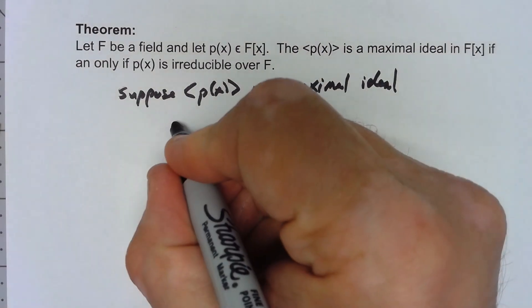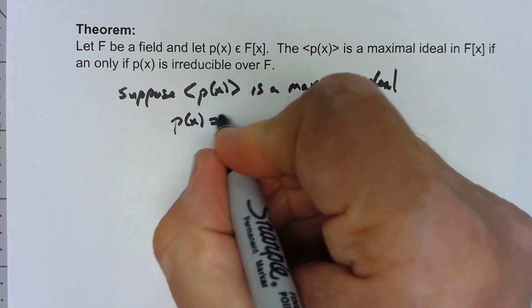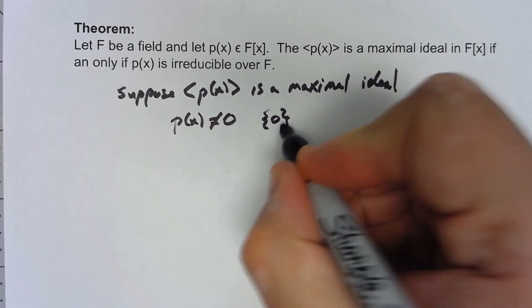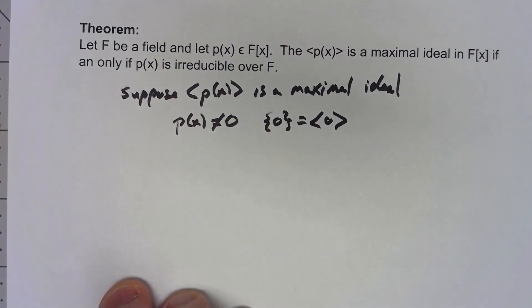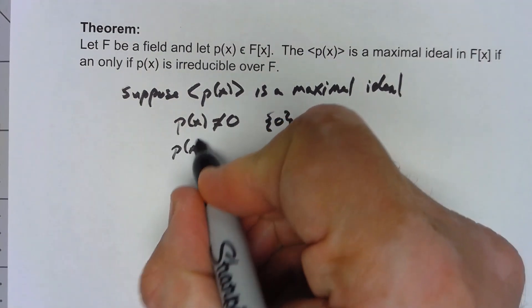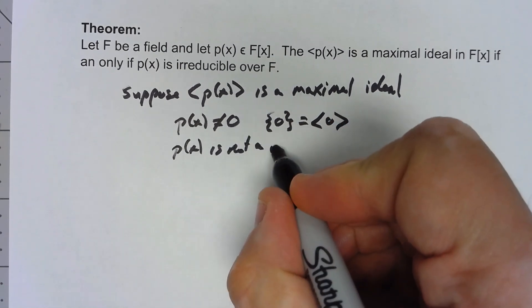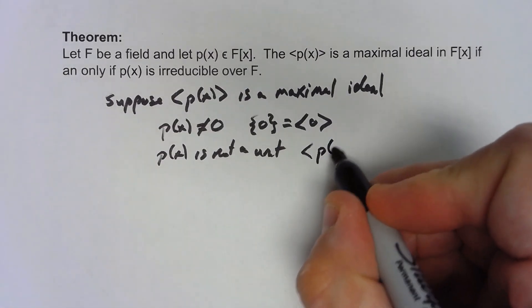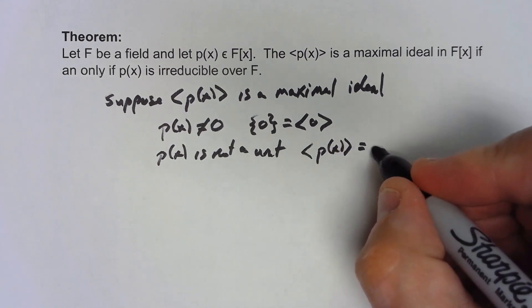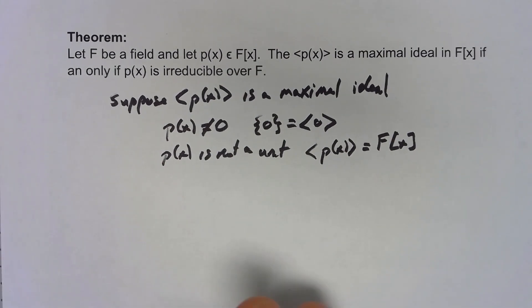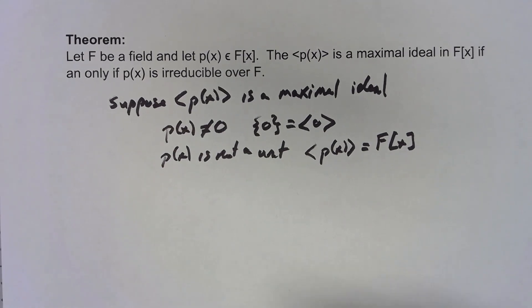First of all, p(x) can't be 0 because certainly 0, which would be the ideal generated by that, that's not a maximal ideal. Also, we can't have p(x) is not a unit because if it were a unit then the ideal generated by p(x) would just be all of F[x] and F[x] can't be a maximal ideal. So what we really have is we've got a polynomial that has a positive degree.